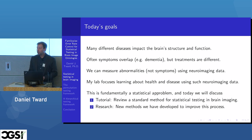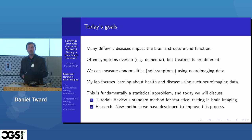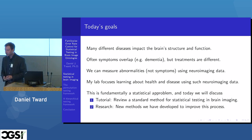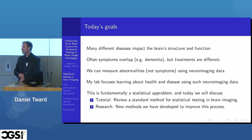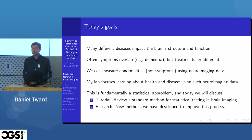There are two concepts I want to go over today. In the first, we'll review a standard method for statistical testing in brain imaging. I'll share some software on Google Colab that you can use to simulate images and simulate statistical tests. In the second part of the talk, I'll go over some new methods we've developed, which we presented at the Organization for Human Brain Mapping this year, that might improve this process in certain contexts.